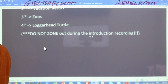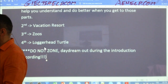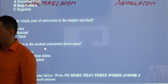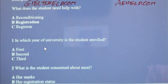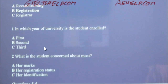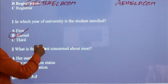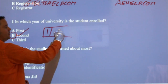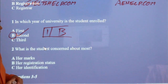Zone out — another way to say it is daydream. Okay, let's answer these questions, students. Look at your paper, look at what you wrote down. Number one: in which year of university is the student enrolled — first, second, or third? You're all saying the answer is B. B it is, you're correct. In the official IELTS for that space, write the capital B. Use the capital letter, especially when you see it in the question like that.